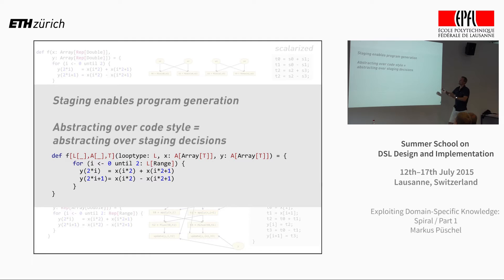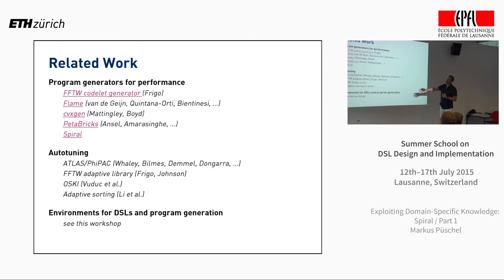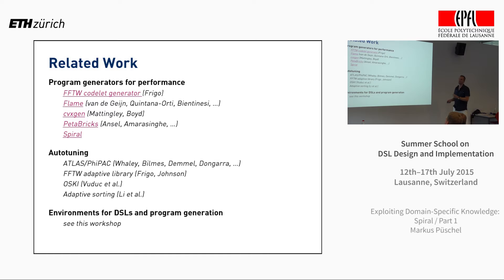Our previous system definitely didn't have this ability to control code style through staging. By choosing different staging decisions, you get different code styles — unrolled or looped — from a single generic version. There's related work to mention: some interesting efforts coming from the performance side rather than programming languages. Here's the codelet generator I mentioned — a 1999 work. Flame is very interesting for linear algebra; there's work on optimization algorithms and auto-tuning efforts that do search, and language environments. This workshop gives a really great overview of different ways of building DSLs and program generators rigorously.